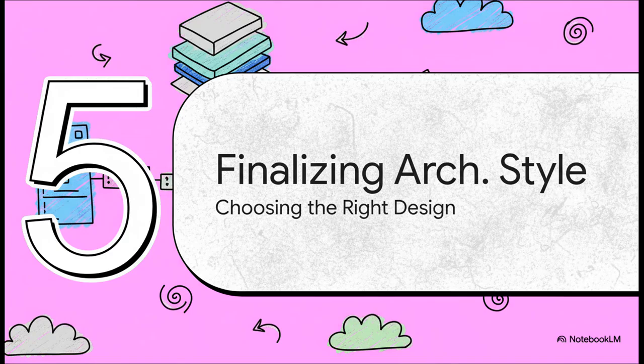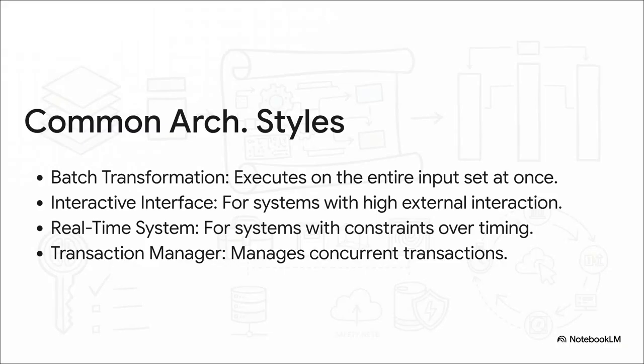We're at the last big decision for our blueprint: choosing the overall architectural style. This is what's going to define the entire personality of our system — how it behaves and what it's really good at. The style you choose totally depends on the problem you're trying to solve. A batch style is for crunching huge amounts of data all at once, like how a bank processes all its reports at the end of the day. An interactive style is what you see on social media — it has to react to your clicks and swipes instantly. A system where lives are at stake, like in an airplane, needs a real-time style where every single millisecond is critical. And a banking app uses a transaction manager to make sure two people can't take out the same money at the exact same time.